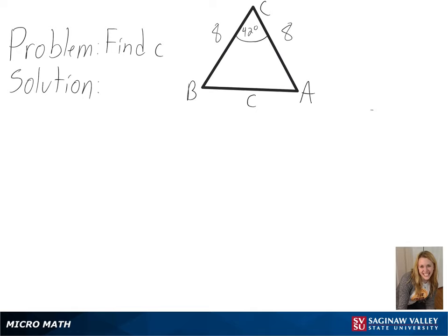Our problem is to find C. Looking at our triangle, we can see the values we know are two side lengths and the included angle. So to find the missing side length, we will be using the law of cosines.